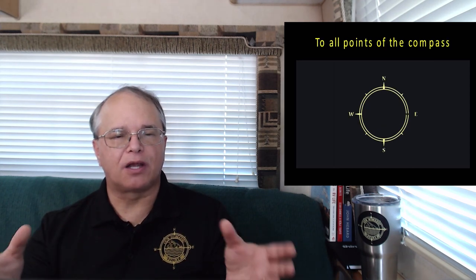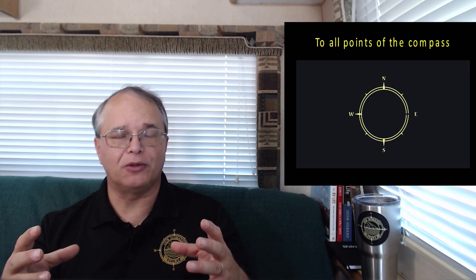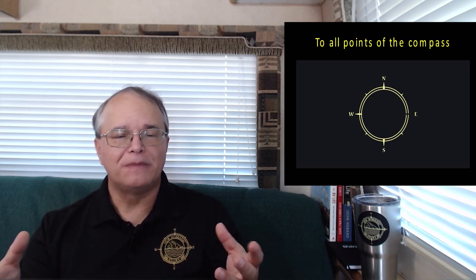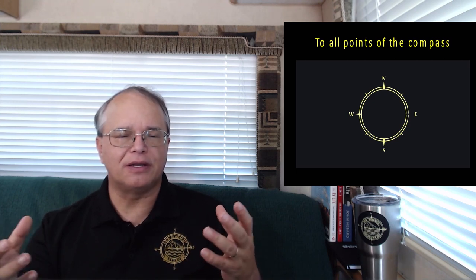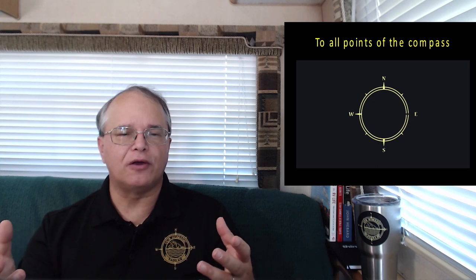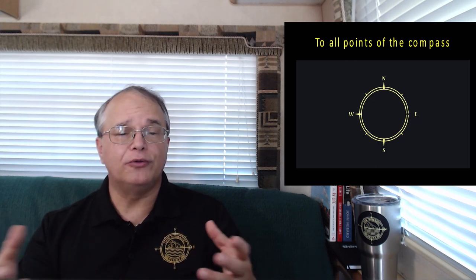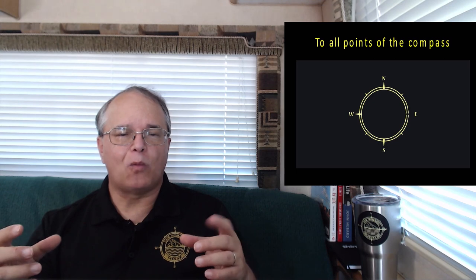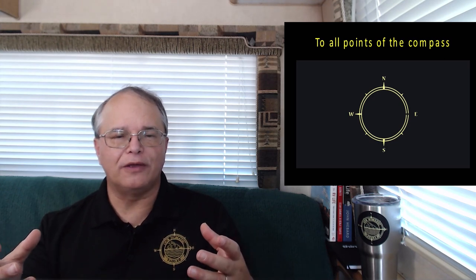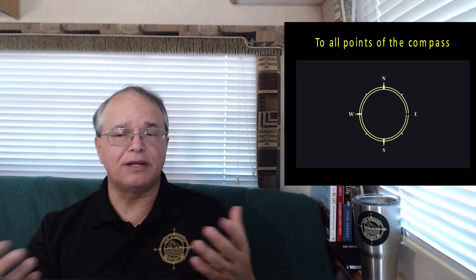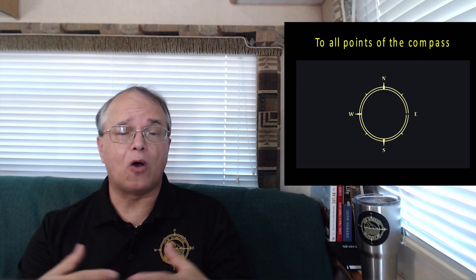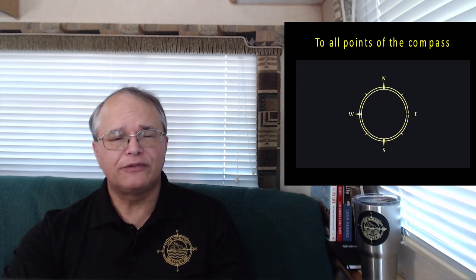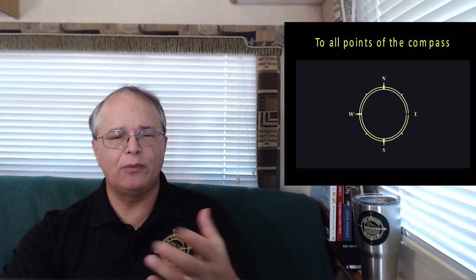The next thing we did was find a complementary shape to go with the 'go' symbol. We wanted something recognizable, so we settled on the compass shape. You'll notice from the previous examples that a couple of those logos included some variation of this shape. We also wanted to include it to represent that our intent as nomads is to go basically anywhere — to all points of the compass.